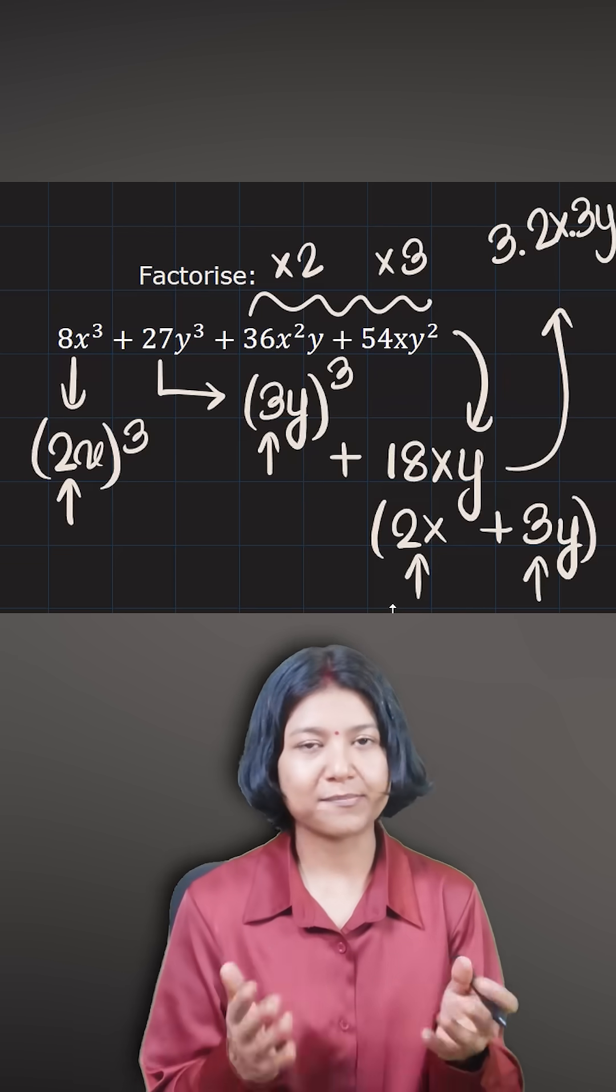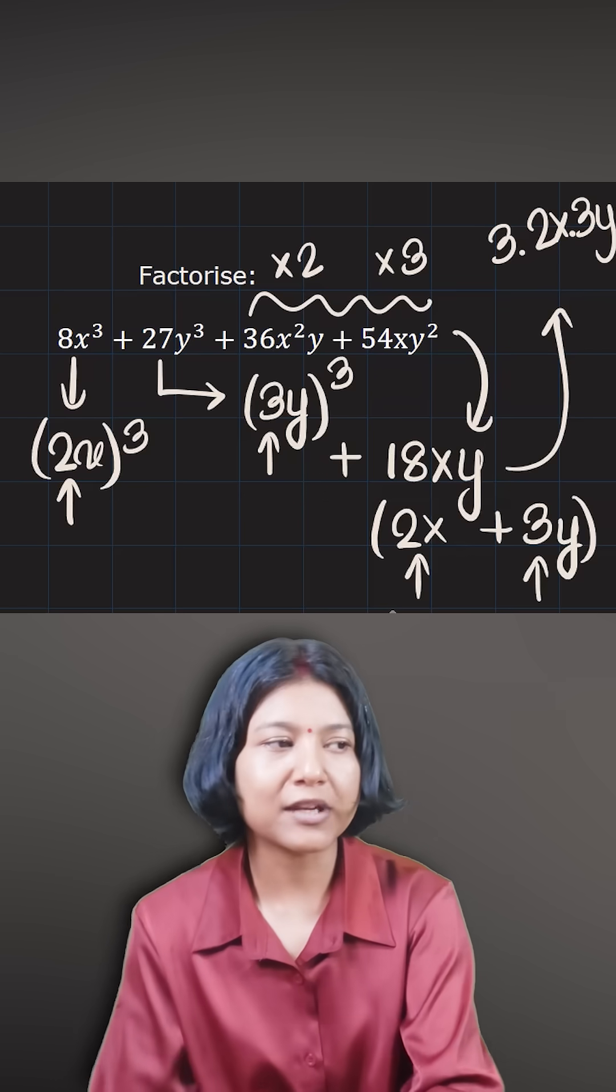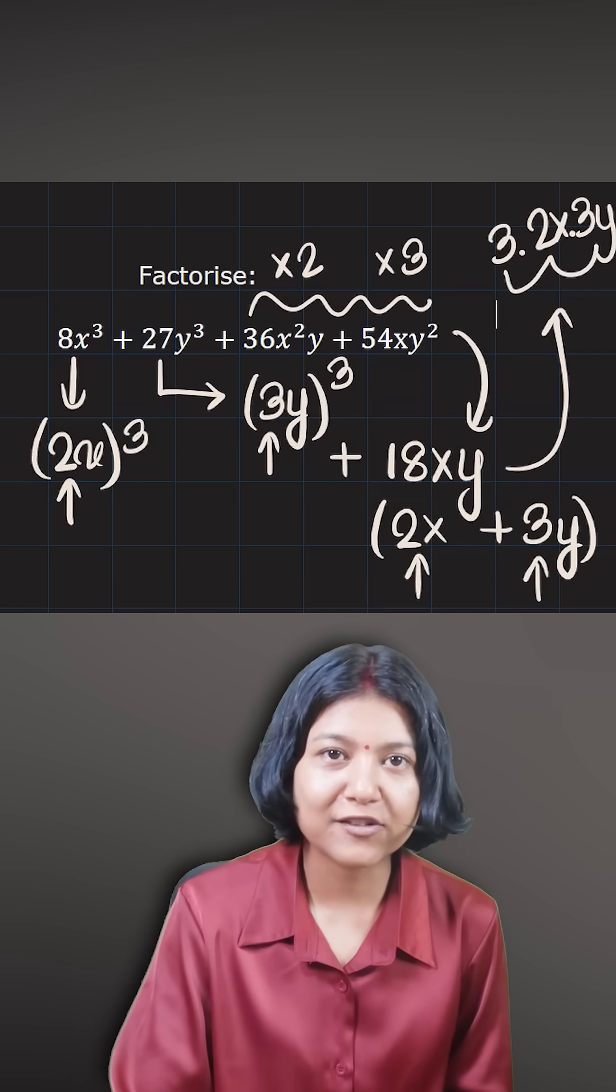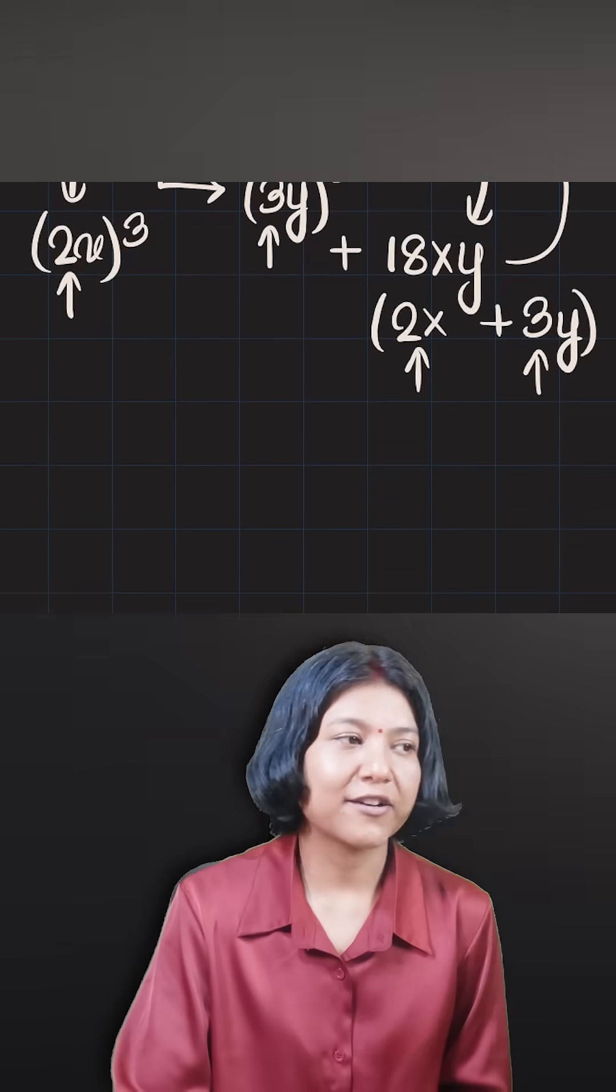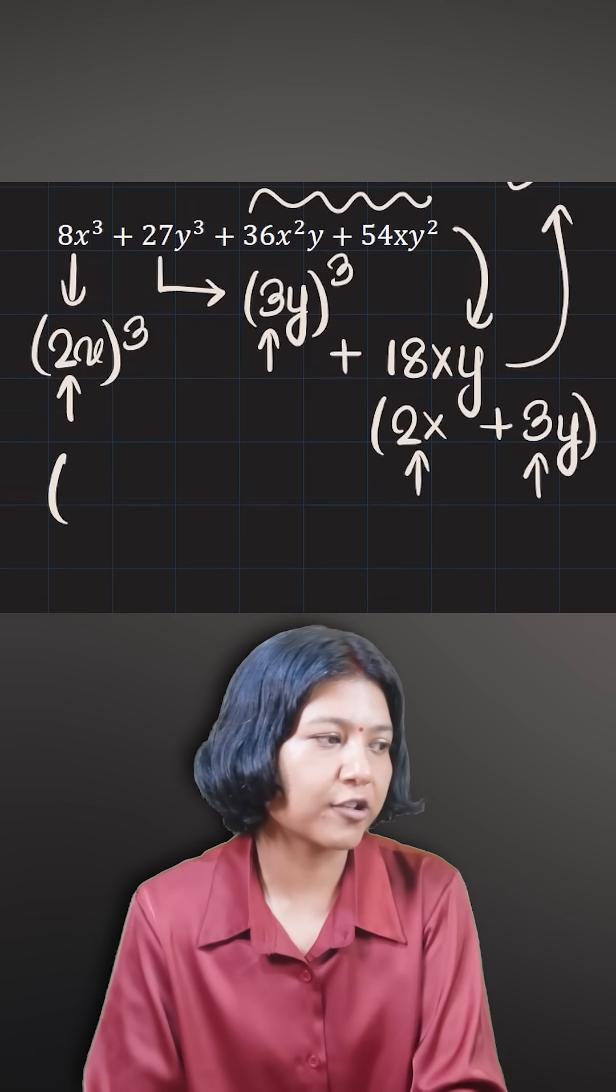So if you see there is a pattern here, the first term is cube. a cubed plus b cubed plus 3 times ab times a plus b. This is an identity for expanding a cubic binomial. This is the expansion for a plus b the whole cube.